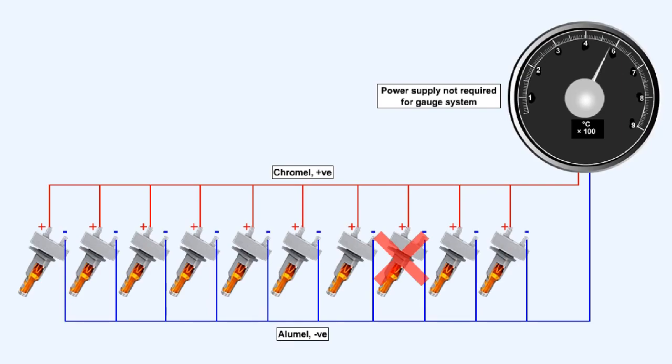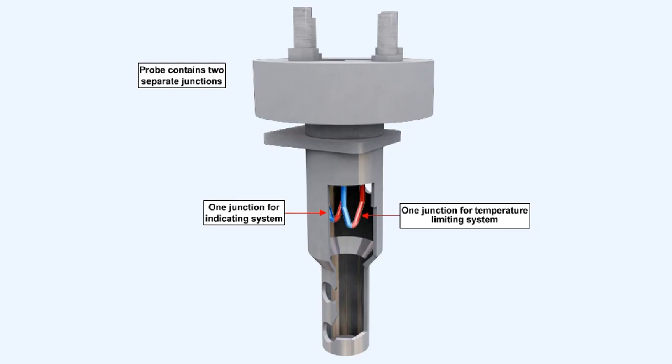The system does not require a power supply for the gauges to work. However, if the potential generated by the probes is to be used to supply a temperature limiting system, the output will need to be amplified. The power required for amplification will be supplied by the aircraft's electrical system. If it's required that the probes supply both a temperature limiting system, otherwise known as a top temperature control, and a temperature indicating system, they will contain two separate junctions: one to feed the temperature limiting system, and one to feed the indicator.